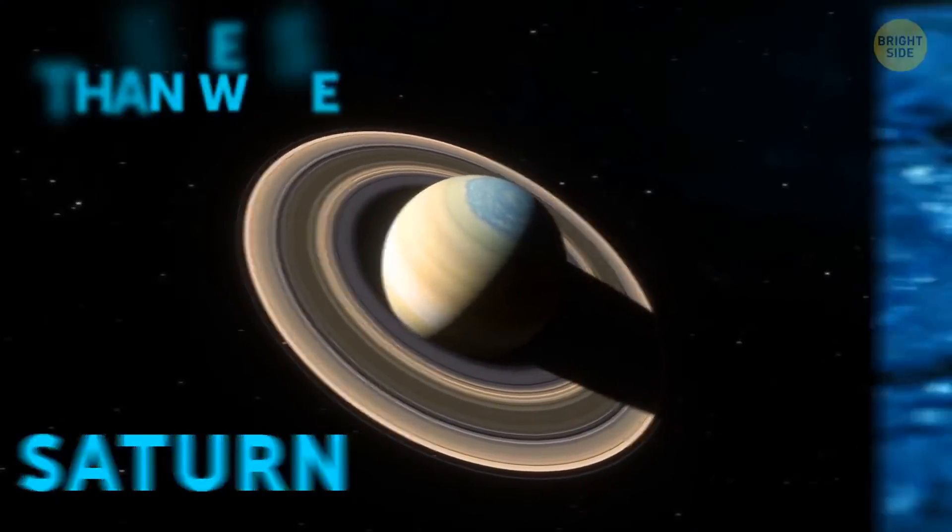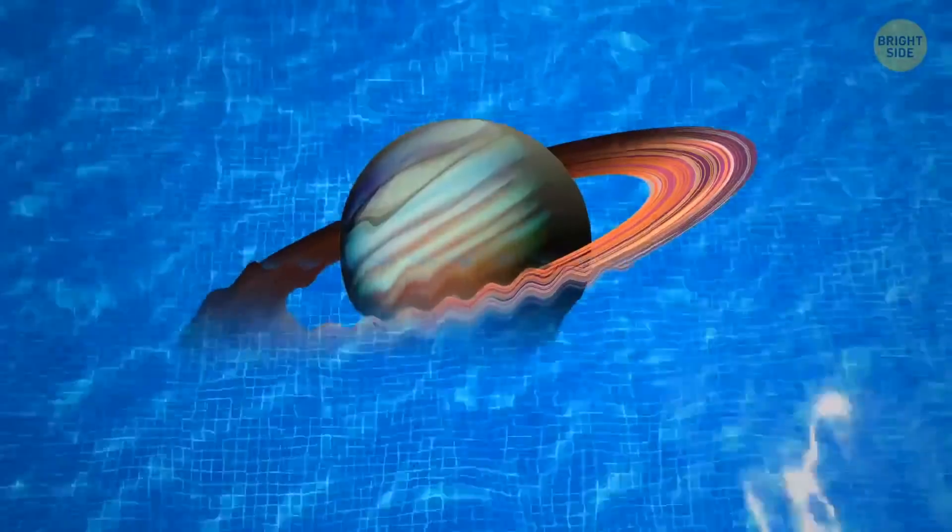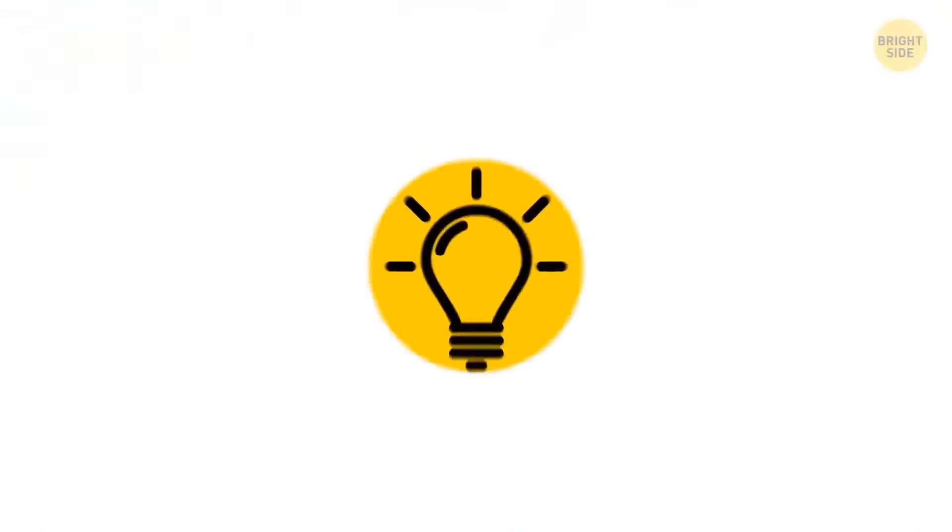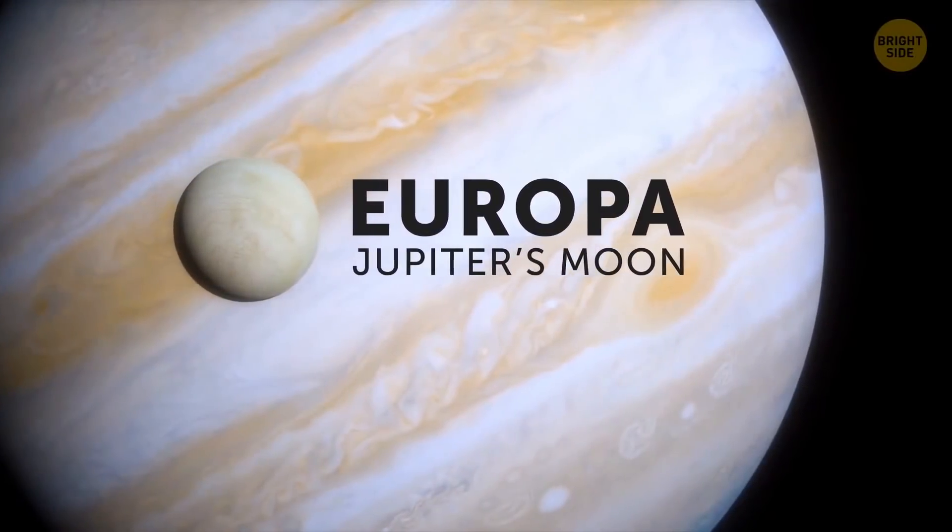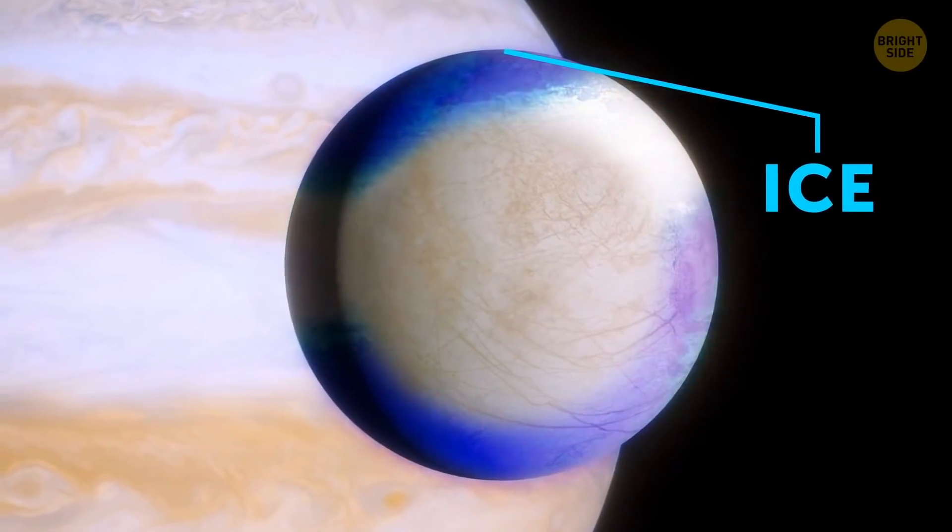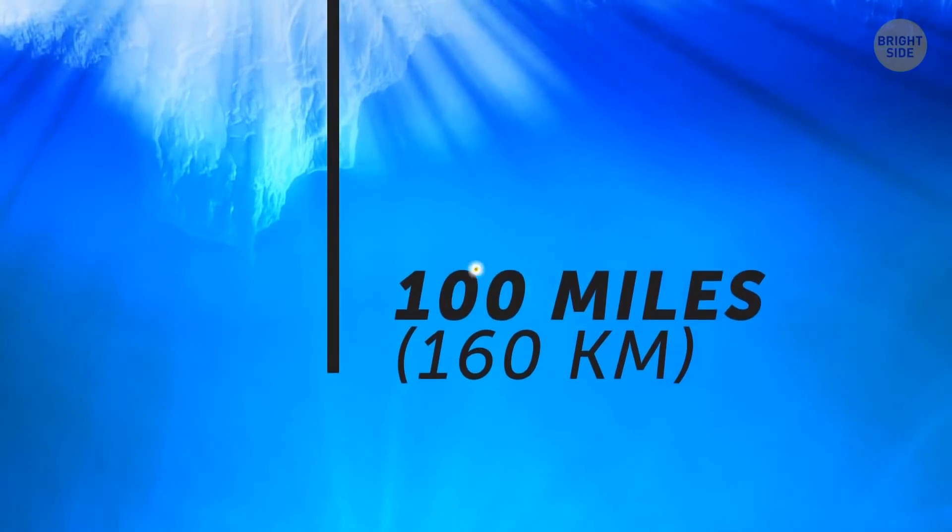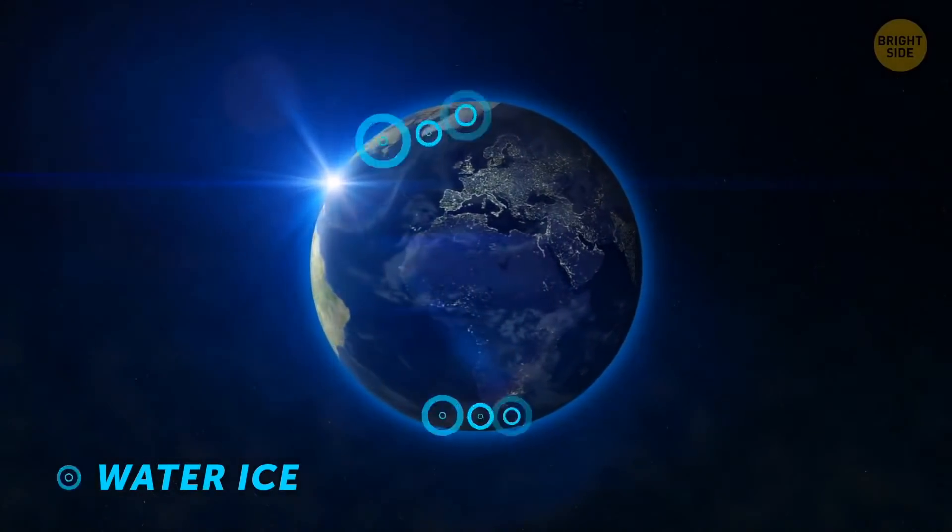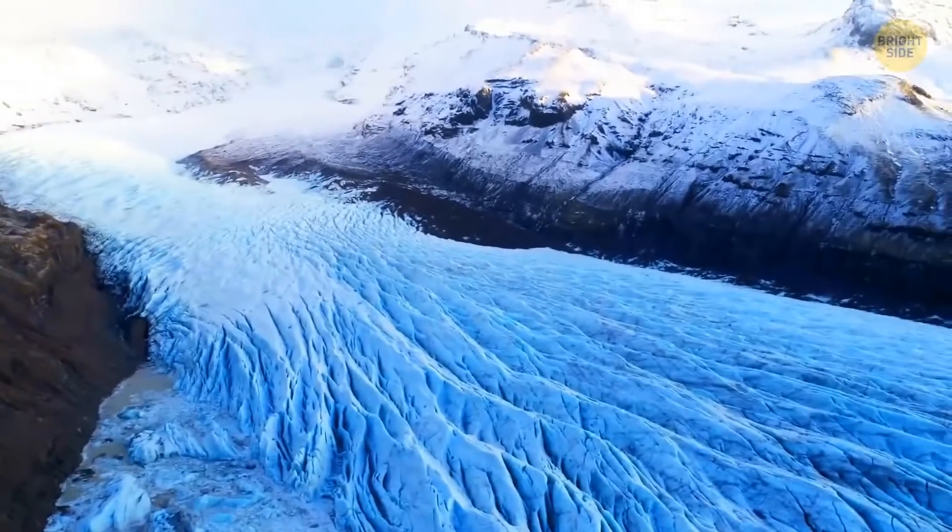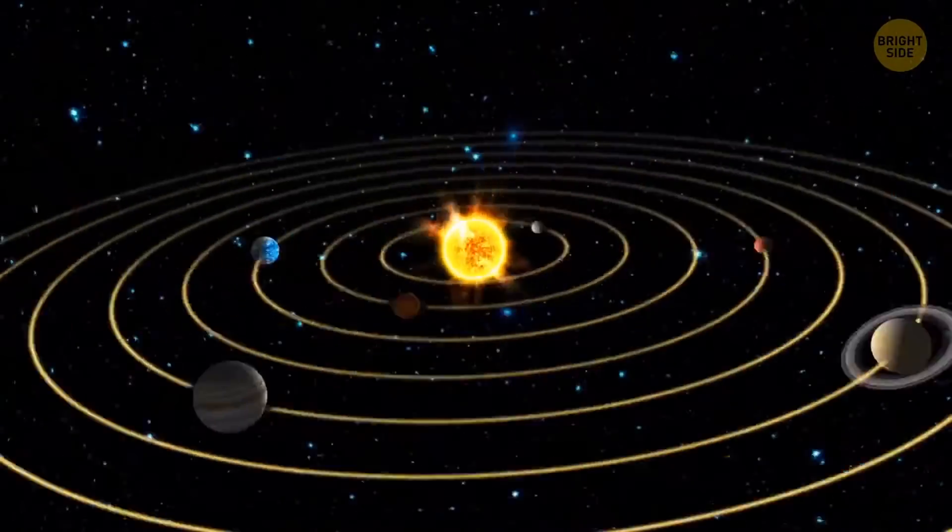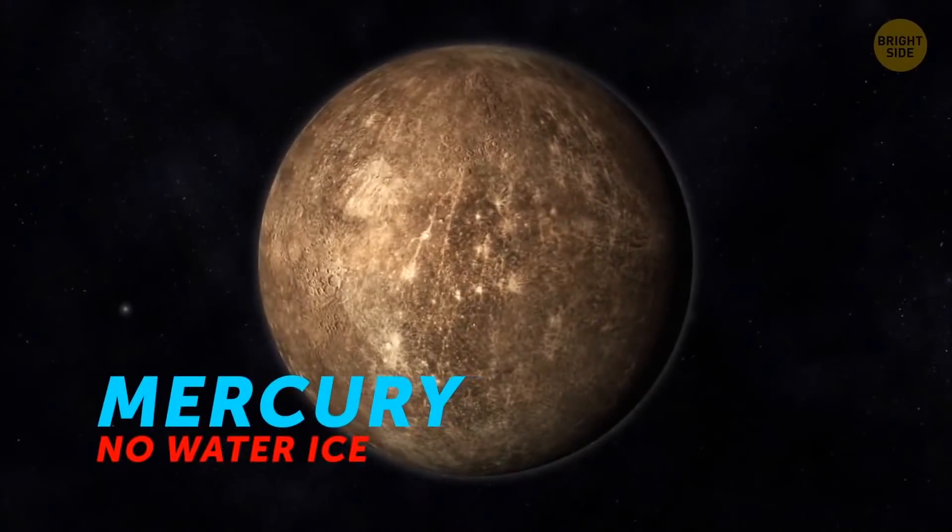Saturn is less dense than water, so if it were thrown into a giant pool, it would float. Jupiter's Moon, Europa, is covered in a thick layer of ice, but underneath it is a vast ocean of water, measuring up to 100 miles deep. Water ice was previously thought to be rare and only common for Earth, but it can, in fact, be found all over the solar system, even on Mercury and the Moon.